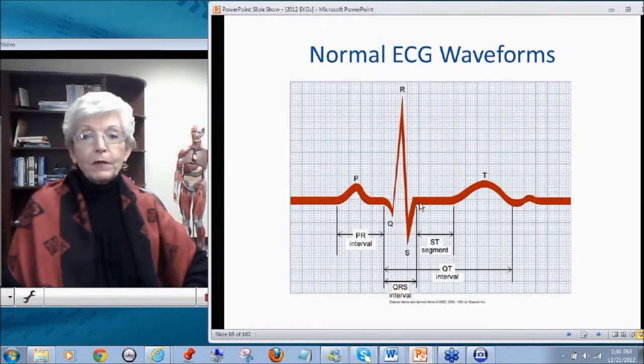Then we should have a flat segment of time. This is called our ST segment. Now this is very important here, we're going to talk about this a bunch, but this should be isoelectric. It shouldn't be up, it shouldn't be depressed, it should be flat. The T wave, and from the beginning of the Q to the end of the T, we call that the QT interval.